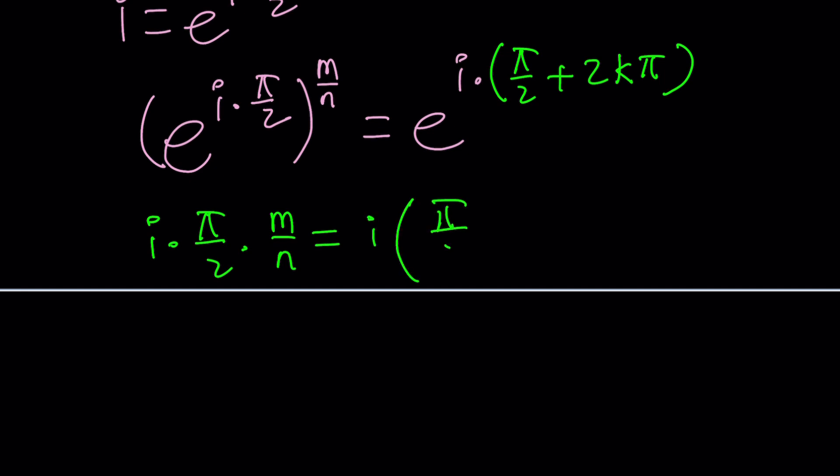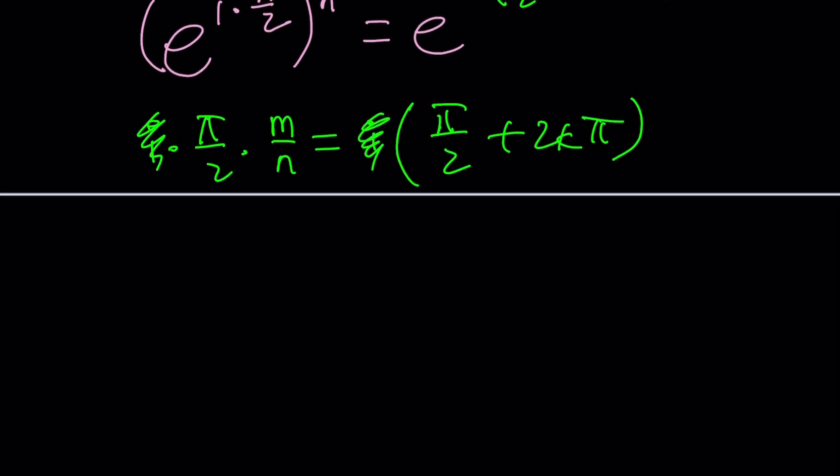So the powers: i times pi over 2 times m over n equals i times pi over 2 plus 2k pi. The i's cancel out, and then we get something like this. You can basically divide both sides by pi over 2.